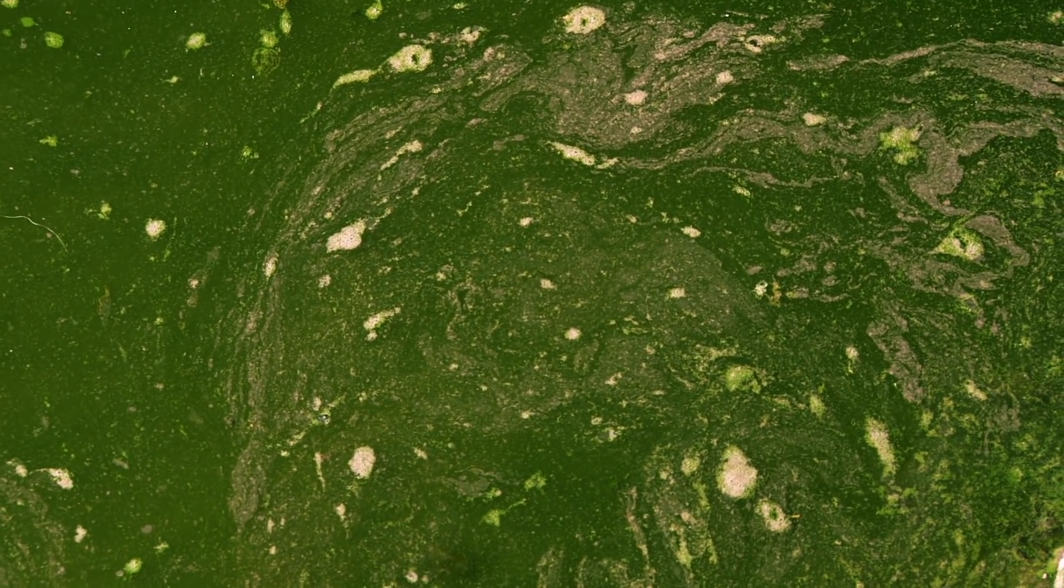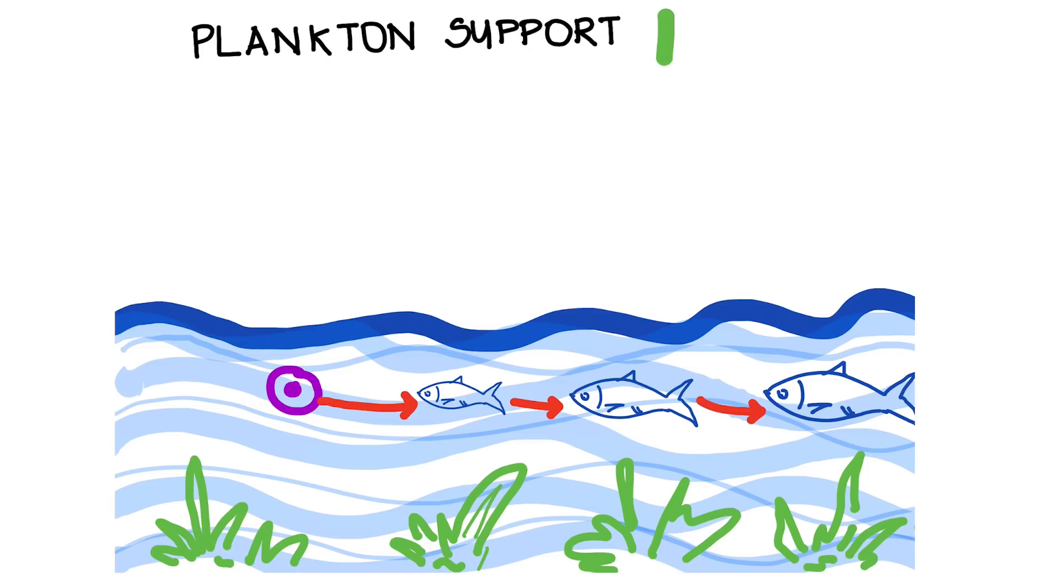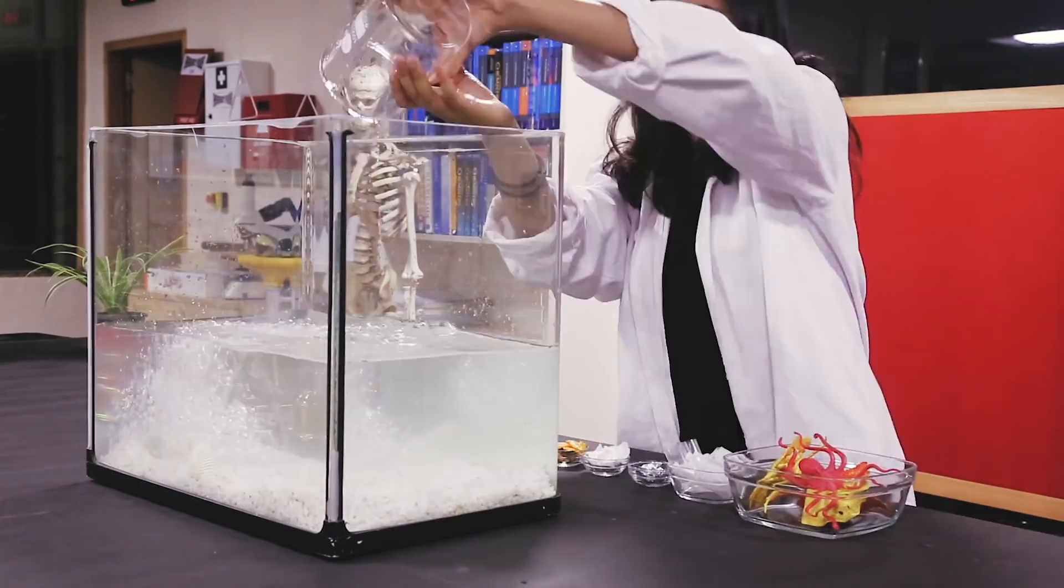When fertilizer runoff produces algal blooms, it can lead to dead zones in the water, which kill plankton. A dead zone occurs when there is no oxygen in that area of the water. Seventy percent of the Earth's oxygen comes from the oceans. And do you know who produces most of that oxygen from the oceans? Hopefully you guessed it. Plankton! Let's take a quick look at simulating what this looks like in the ocean.